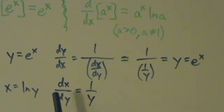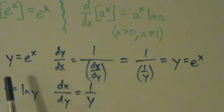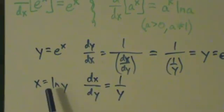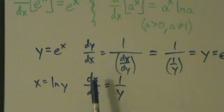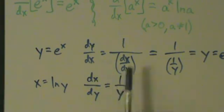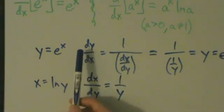But that's just the crazy thing about e to the x. So again, just to recap real quick, we said y equals e to the x, so that means x equals natural log of y. Therefore, dx dy is 1 over y. Then here we went back and said, okay, so what's dy dx?